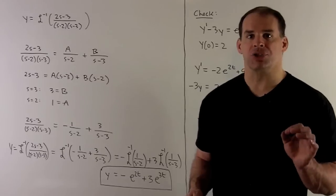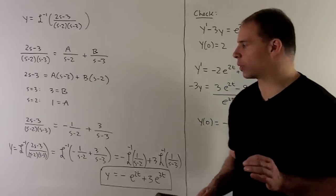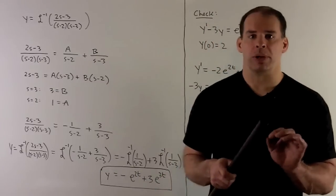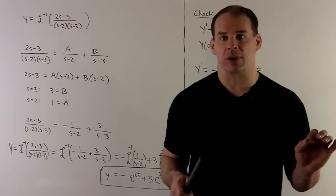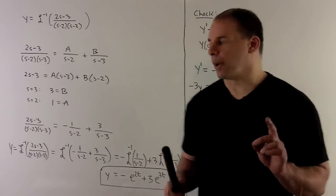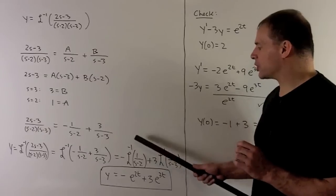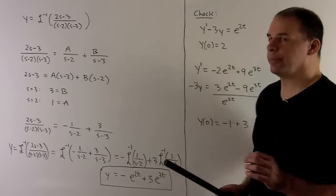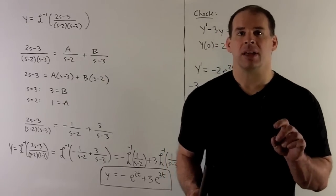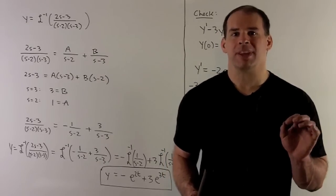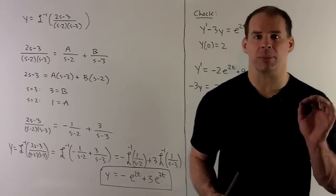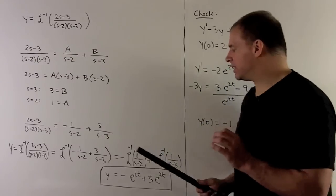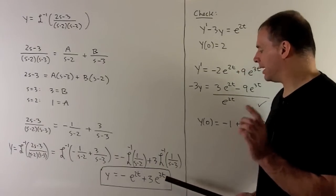We apply the inverse Laplace transform to the partial fraction expansion. Since the inverse Laplace transform is also linear, we break apart the sum and factor the numbers out. We need the inverse Laplace transform of 1 over s minus 2 and 1 over s minus 3. From our list, the inverse Laplace transform of 1 over s minus a is e to the at. So we replace these with e to the 2t and e to the 3t, giving our solution to the initial value problem.